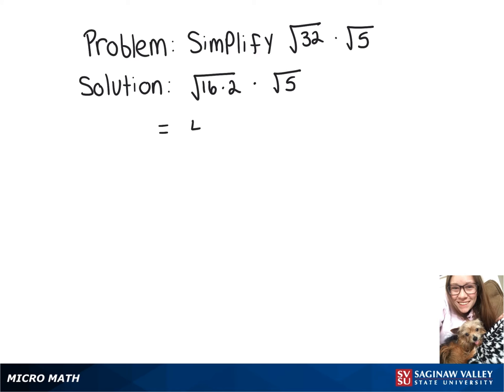The square root of 16 is 4, so we can pull that outside the square root, leaving us with 4 root 2 times the square root of 5.